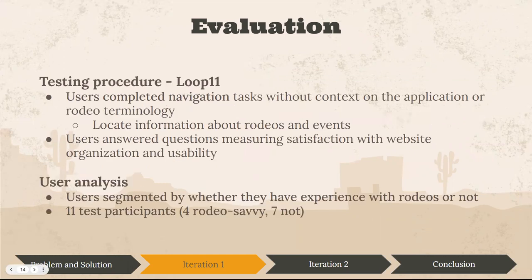The way that we measured how we were doing was using Loop 11. We recruited some users — both rodeo-savvy users and also people that don't know anything about rodeos or how to run them — and we got them to download the Loop 11 Chrome extension and go through these rodeo tasks. They didn't have any context prior to doing these tests, and then we were able to segment those users and measure qualitative and quantitative data to measure how we were hitting our goals.